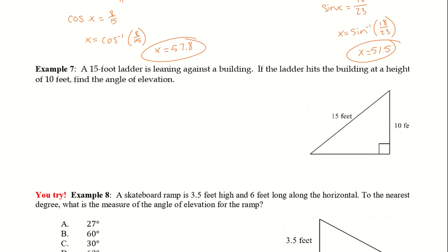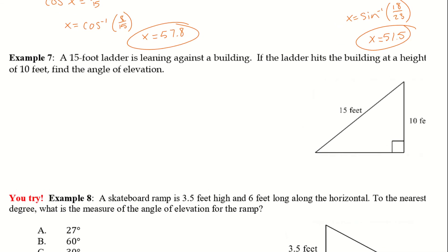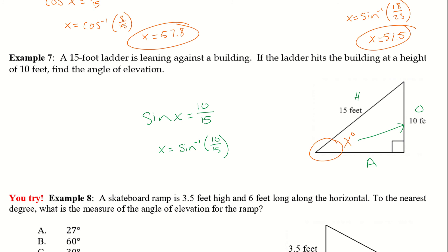Example 7: a 15-foot ladder is leaning against a building. If the ladder hits the building at a height of 10 feet, find the angle of elevation. The angle of elevation is from the ground — label that x degrees. Label what we know: opposite is 10, hypotenuse is 15, and the adjacent. So sine of x equals 10 over 15. Using inverse sine: x equals inverse sine of 10 over 15, and I get 41.8 degrees — that's our angle of elevation.